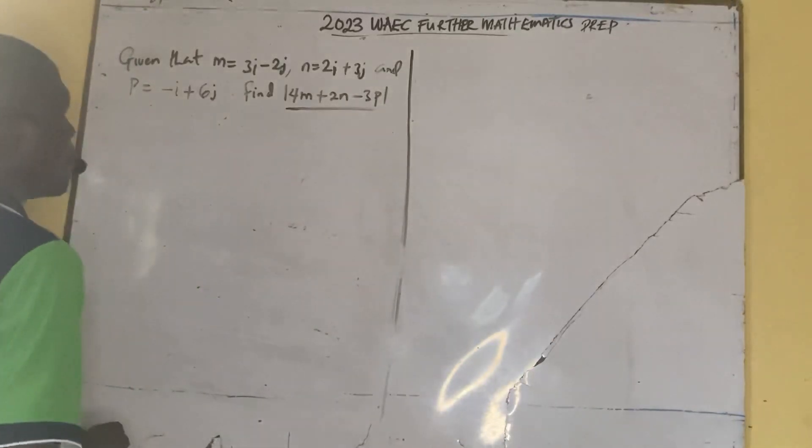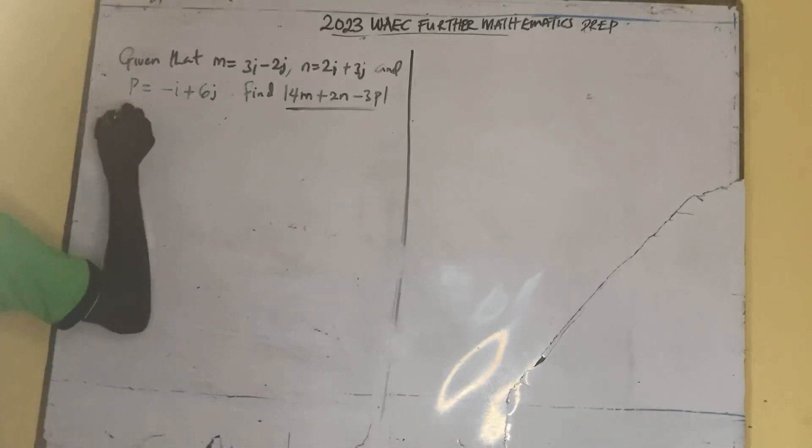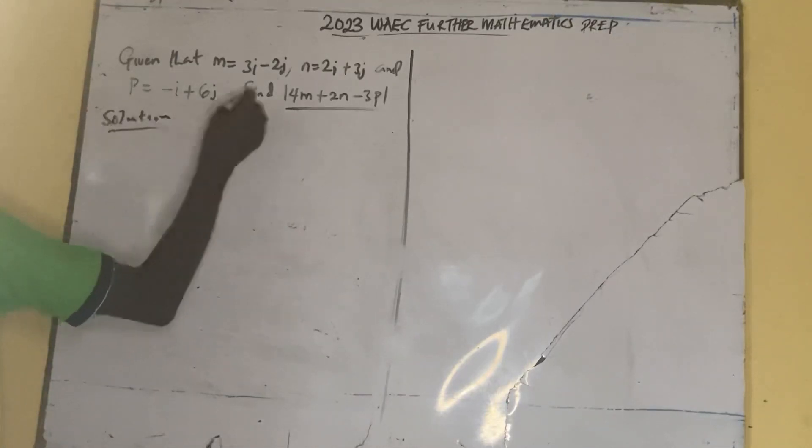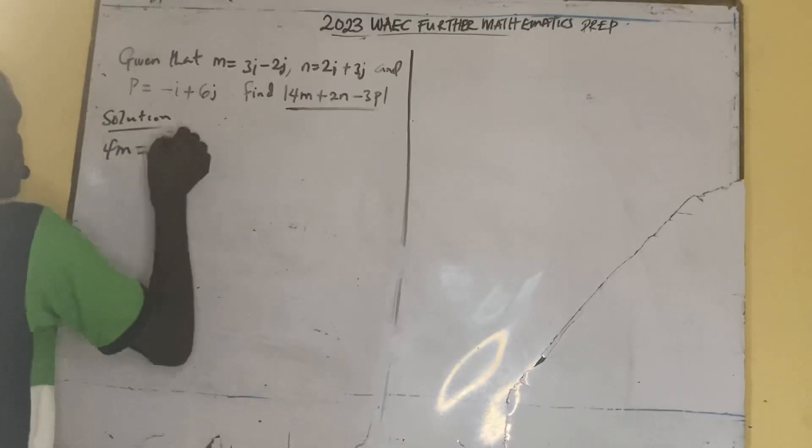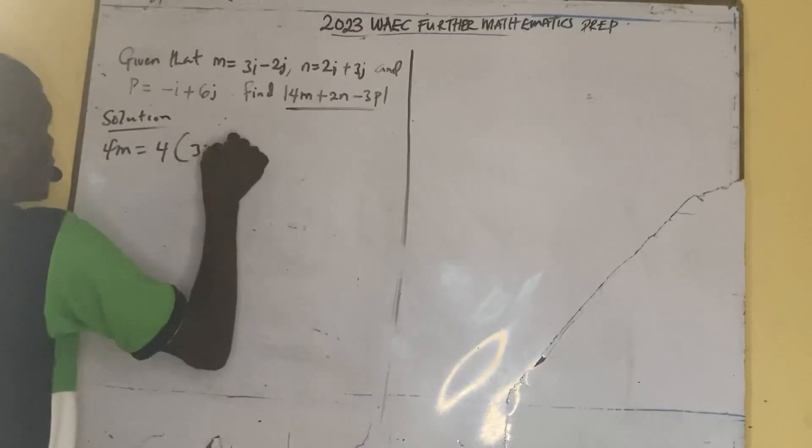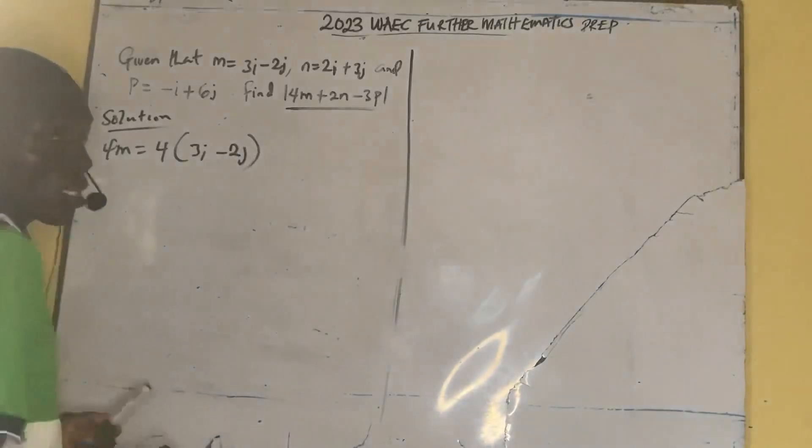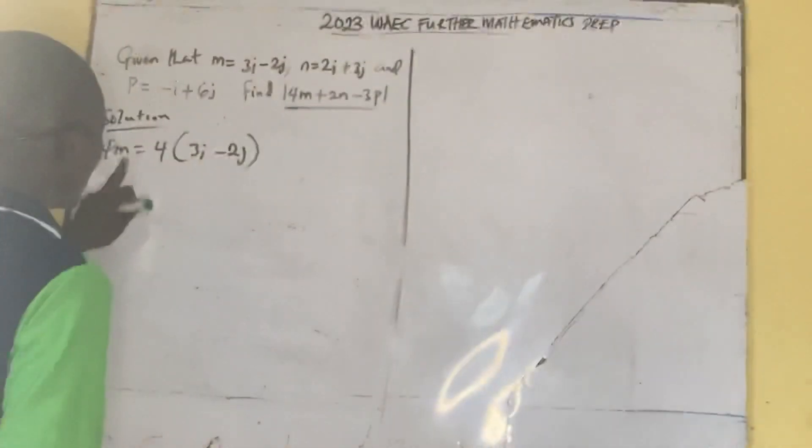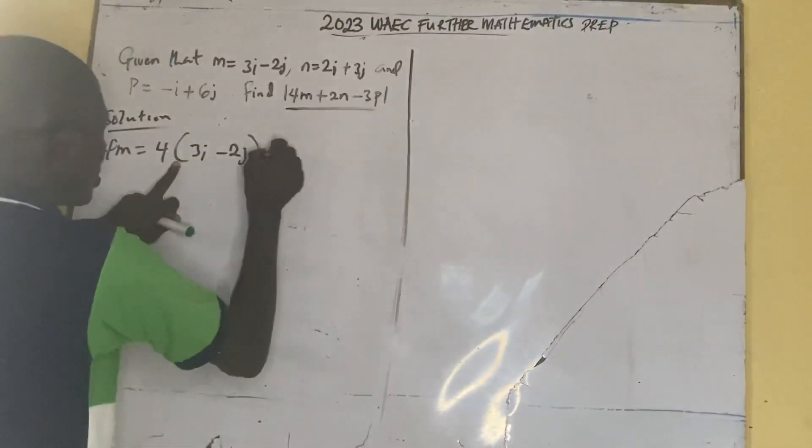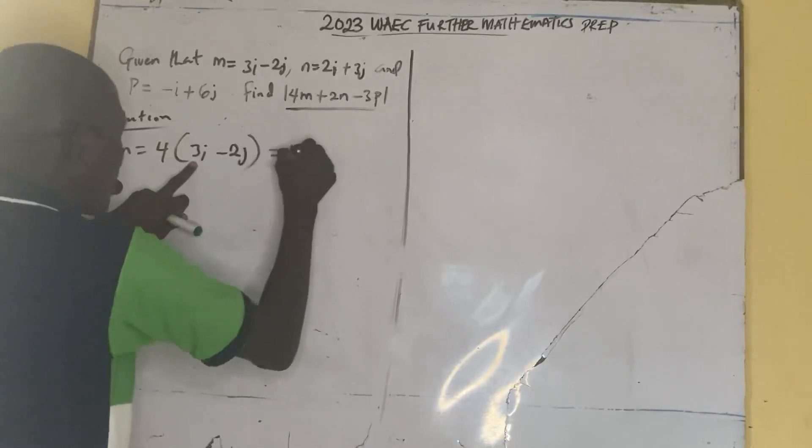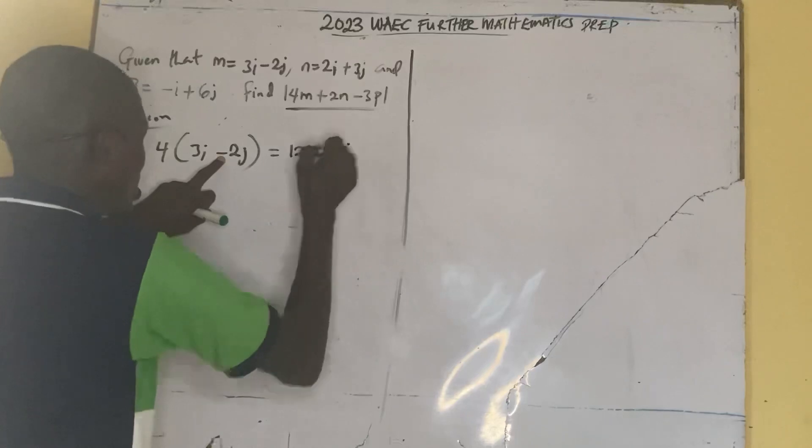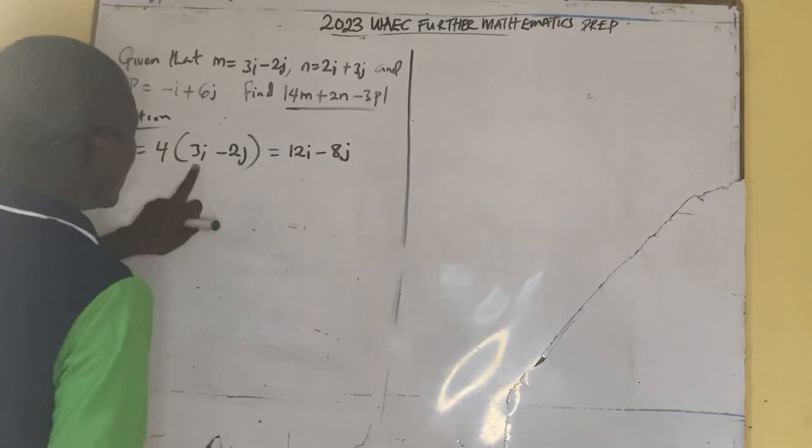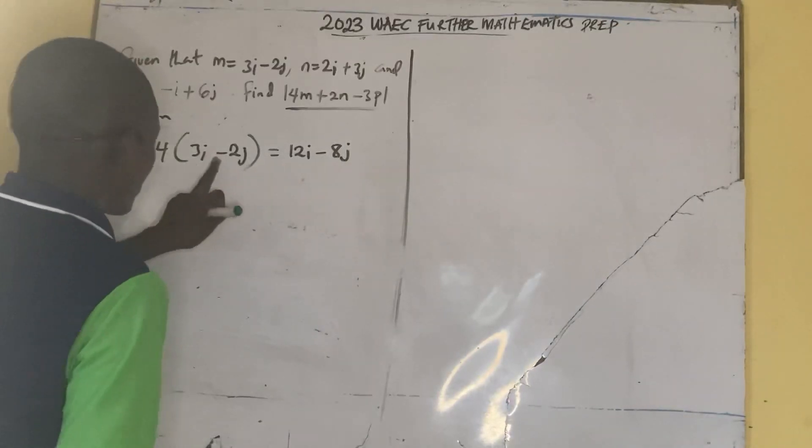4m plus 2n minus 3p. The first thing is the solution, find individual components. First, 4m equal to 4 into bracket 3i minus 2j. So 4m equal to 4 times 3 is 12i minus 8j. 4 times 3i is 12i, 4 times 2j minus 8j.